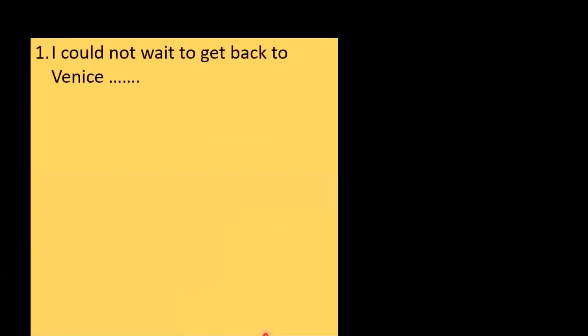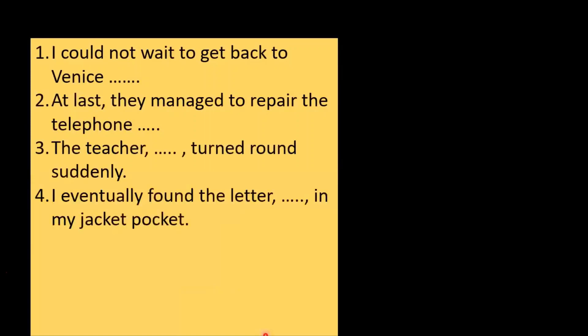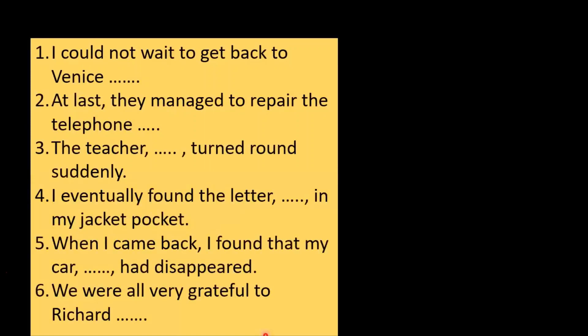These are the questions from your textbook — in fact, these questions have been included in model questions too. There are altogether six questions and the instruction is: 'Continue the following remarks using a relative clause.' Question number one: I could not wait to get back to Venice. Venice is a place, so simply you can say 'where I was born.' Number two: At last they managed to repair the telephone. Telephone is an object, so you take the relative pronoun which.